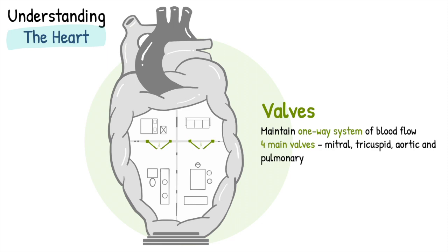There are four main valves within the heart, with one between the chambers on either side and one just before the main arteries, which are the aortic and pulmonary arteries. Problems can arise when the valves become too tight, restricting blood flow across the valve, or becomes leaky, allowing backflow of blood.